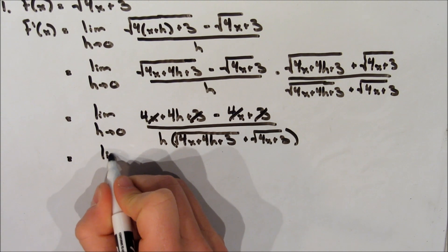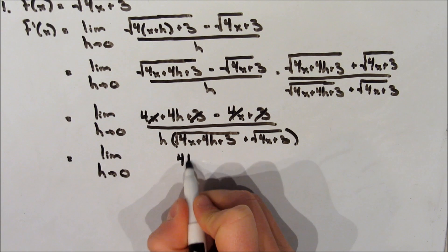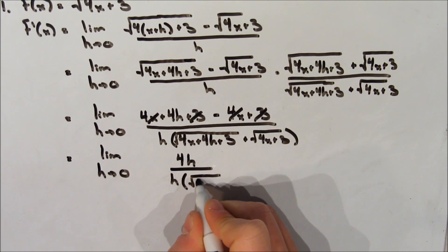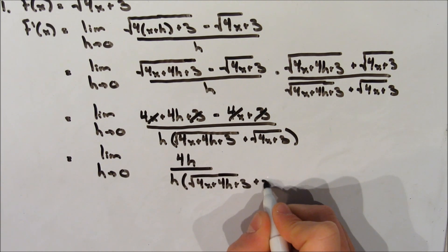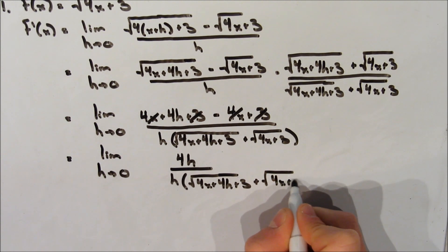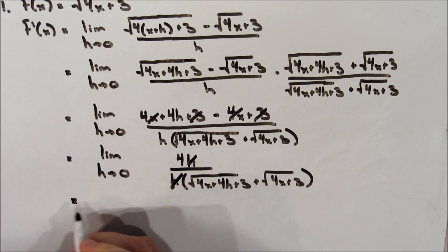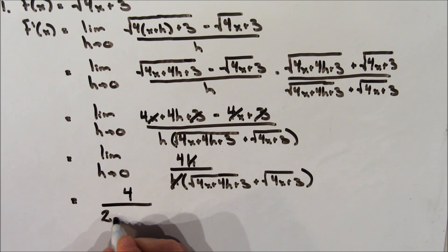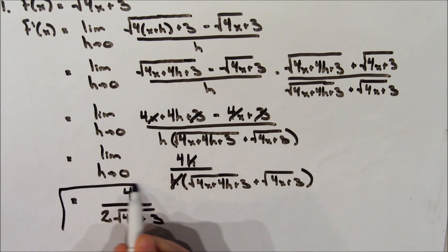After canceling terms, we are left with 4h over h multiplied by the square root of 4x plus 4h plus 3, plus the square root of 4x plus 3. We cancel the h's and evaluate the limit as h approaches 0 by substituting 0 everywhere, leaving us with 4 over 2 times the square root of 4x plus 3. That's the derivative of our original function.